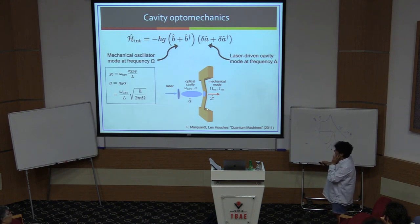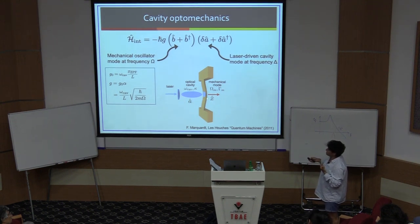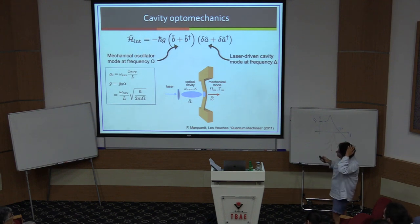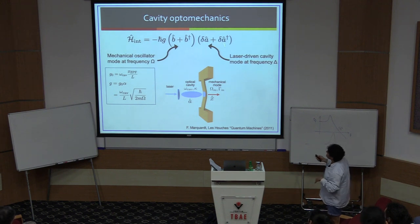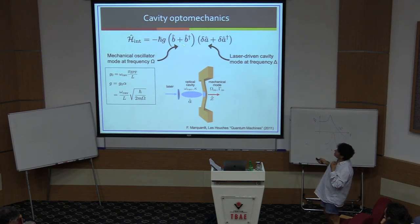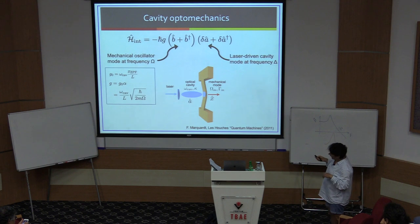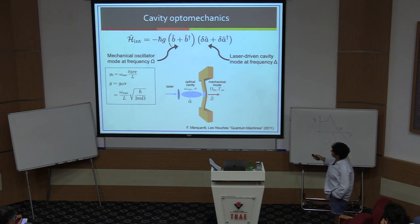I've swept many things under the rug to get to this interaction Hamiltonian, because it's a very nonlinear system that must be linearized. But I put this Hamiltonian up so you can see it should remind you very much of the Hamiltonian for the nonlinear optical medium with the squeezer. Basically, you have two modes — in this case one mechanical mode B and one optical mode A — which could just as soon have been two optical modes as in the nonlinear optics case. The coupling constant G actually depends on the zero-point fluctuations of the mechanics compared to the force that the optics can apply.